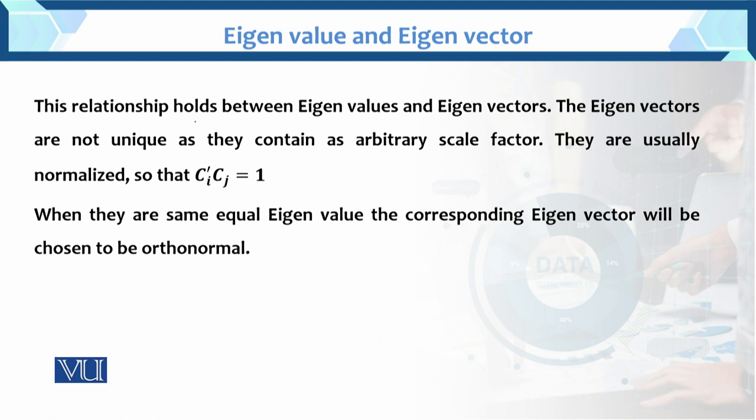This relationship holds between eigenvalues and eigenvectors. The eigenvectors are not unique as they contain an arbitrary scale factor. For example, consider the equation x₁ + 2x₂ = 0. Until we know the values of x₁ and x₂, or specify them ourselves, we cannot get a solution to this equation.